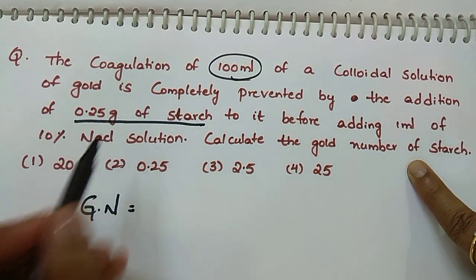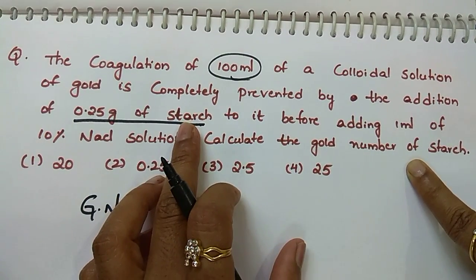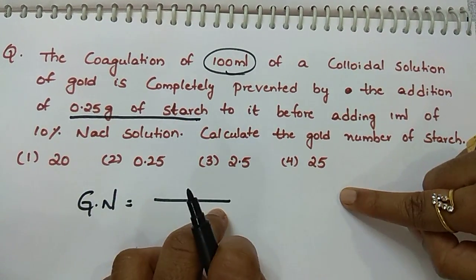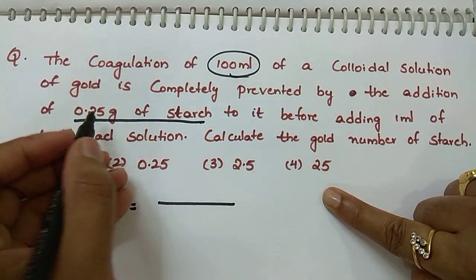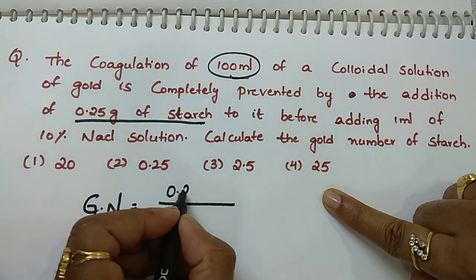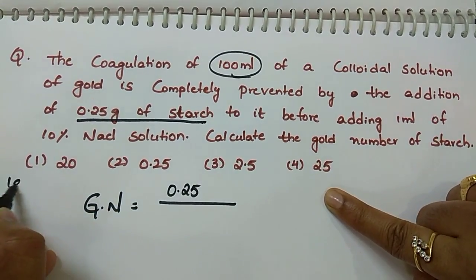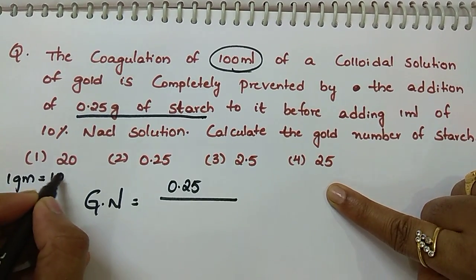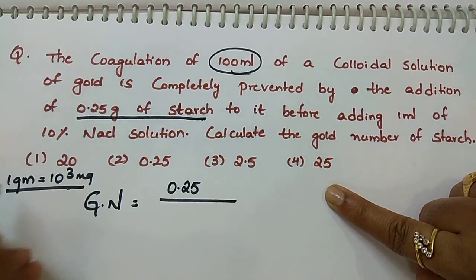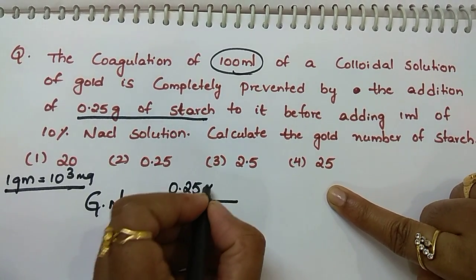How many grams is given? 0.25. One gram equals how many milligrams? 1000 milligrams. So convert the given gram into milligram - 0.25 into 10 power of 3 milligram divided by volume of solution.